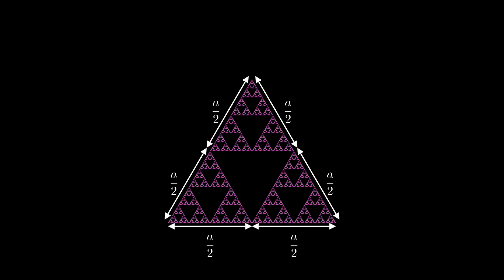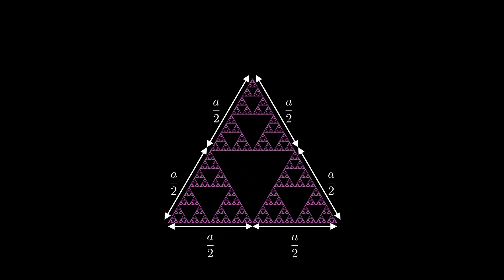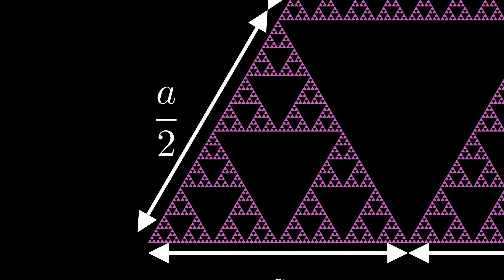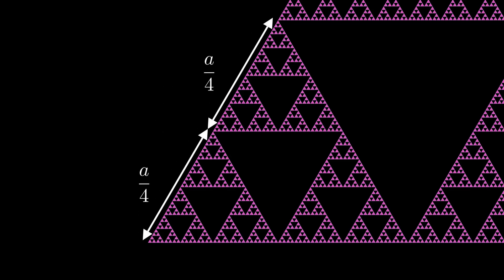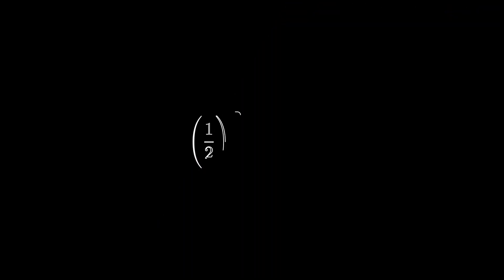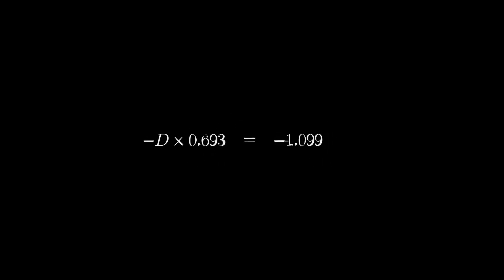To calculate the dimension of such an object, we use the same scaling procedure as for our Euclidean shapes. Each Sierpinski triangle with side A consists of three smaller copies of itself with side A/2 — a property called self-similarity, where a part of the shape looks the same as the whole. Hence, whatever characteristic we associate with this shape decreases by a factor of 3 upon scaling down its edge by a factor of 2. We need to find a number D such that (1/2)^D = 1/3. Taking the logarithm on both sides, this set has a dimension of 1.585.